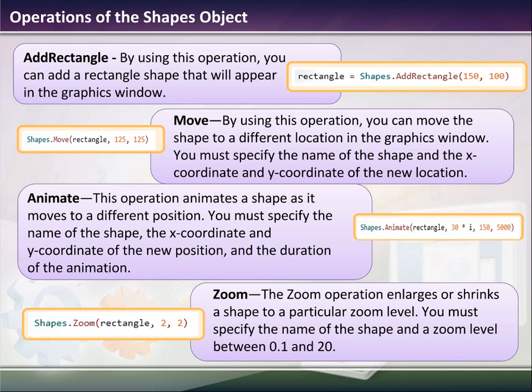So then we can zoom, and that enlarges and shrinks the object. You must specify the name and shape, and the zoom level is anywhere from 0.1 to 20.